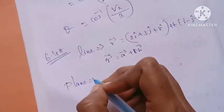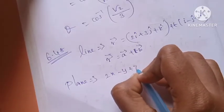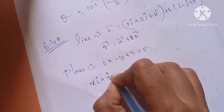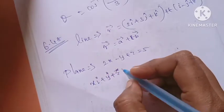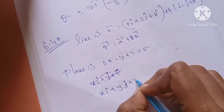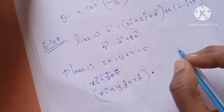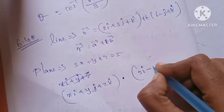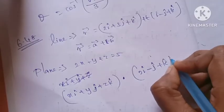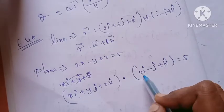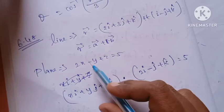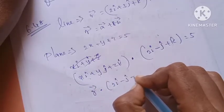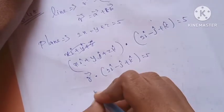Next, we will write the plane equation. The plane is given as: r vector dot (i minus j plus k) equals 5. From this, we can identify the normal vector n as the coefficient vector in the dot product form of the plane equation.